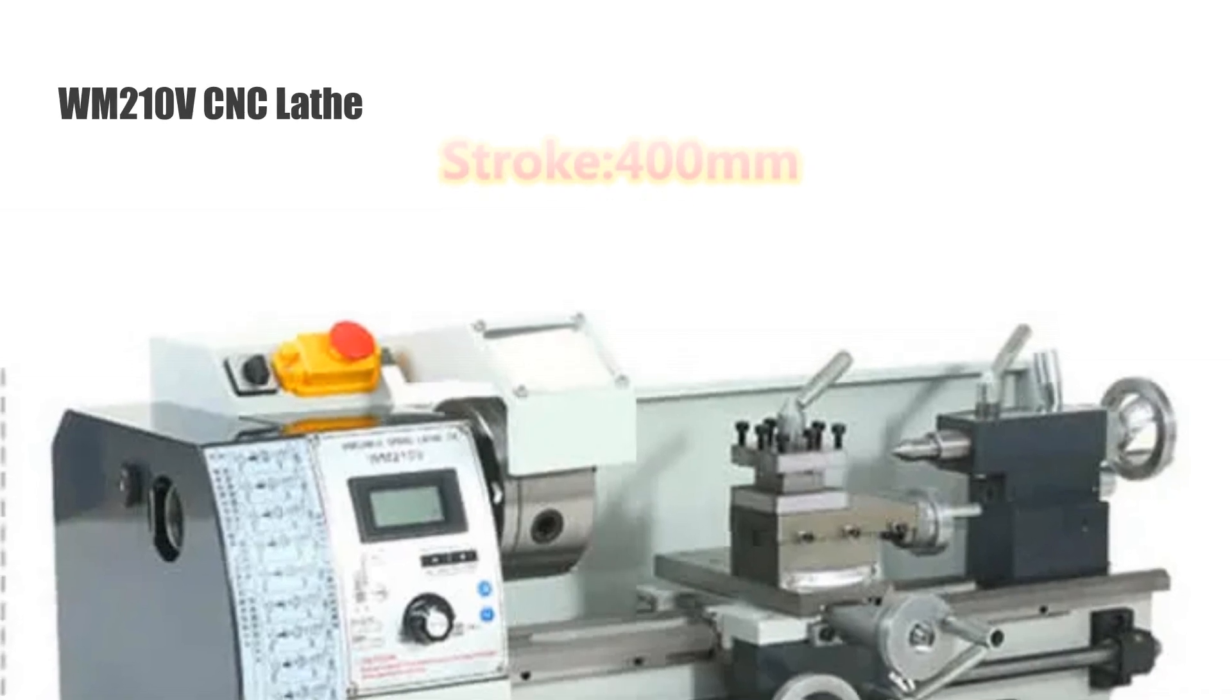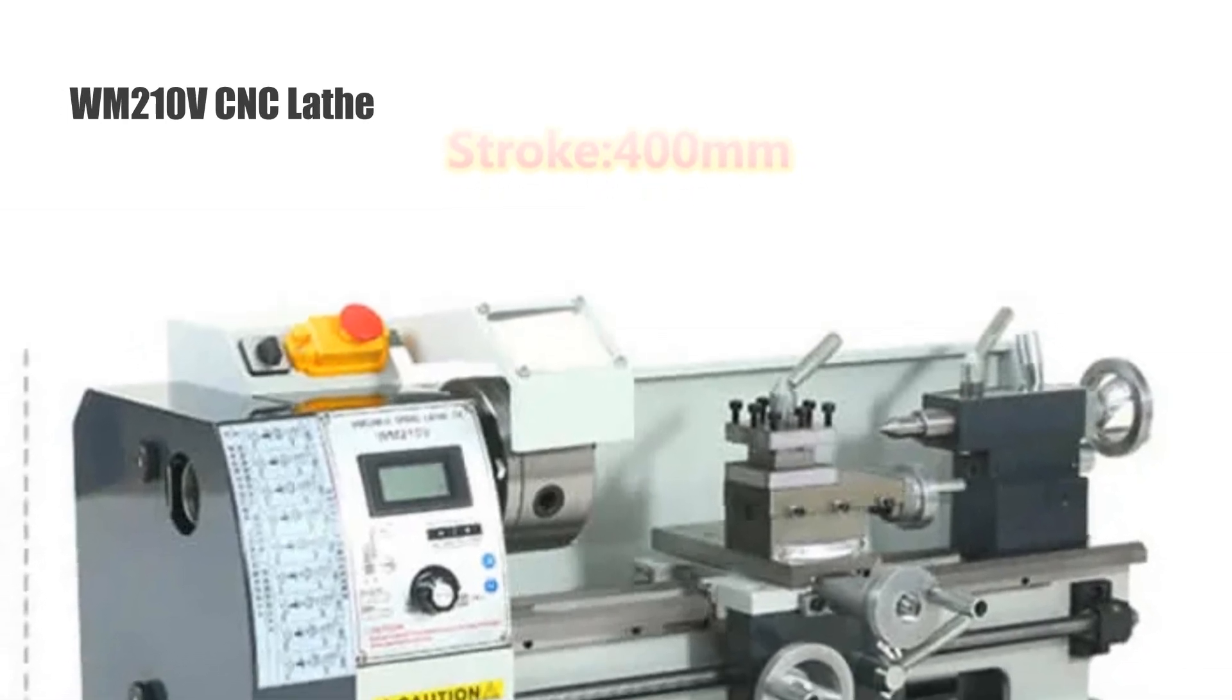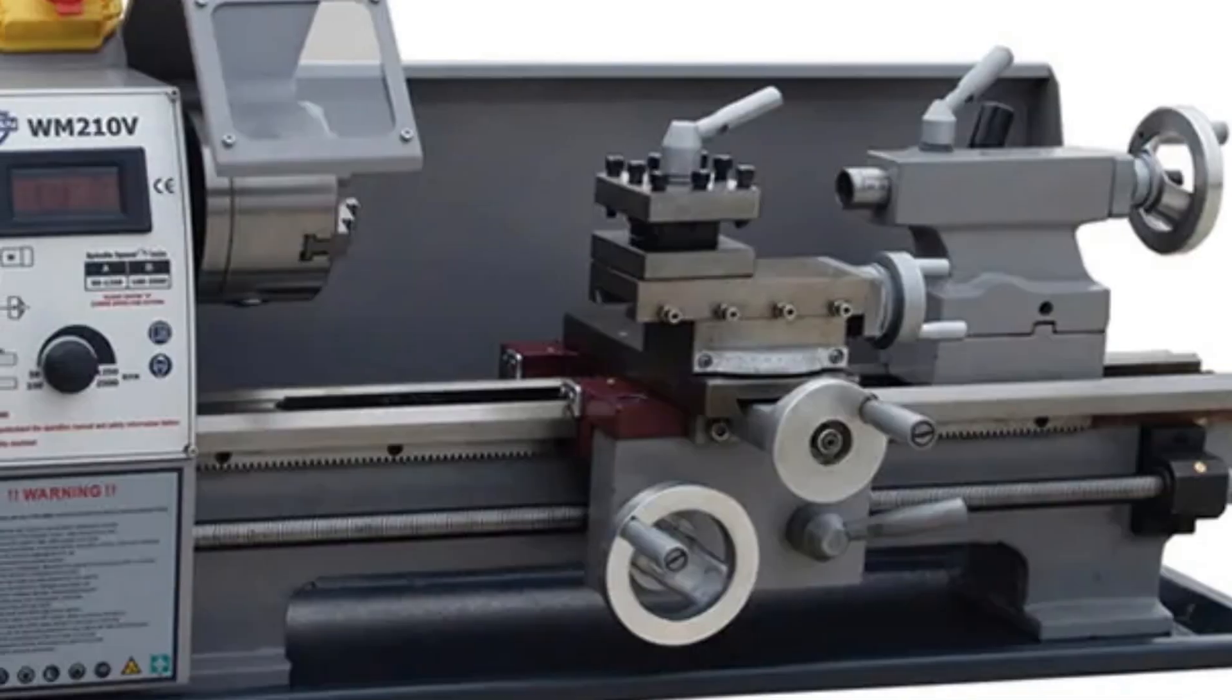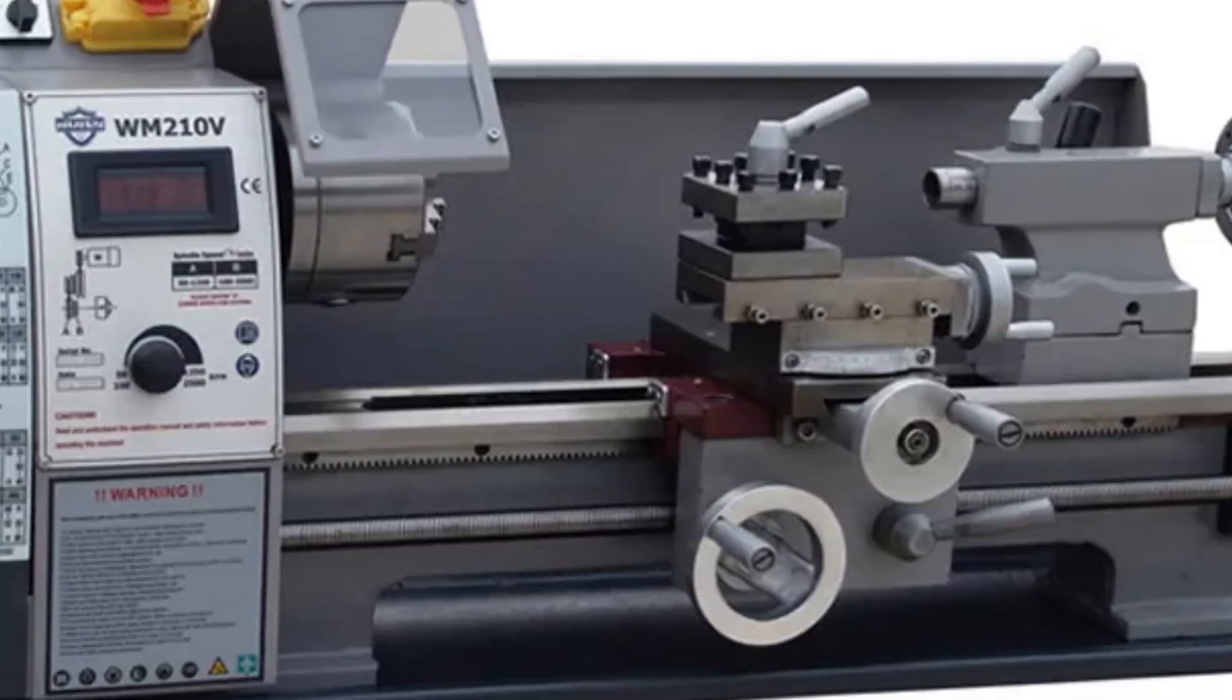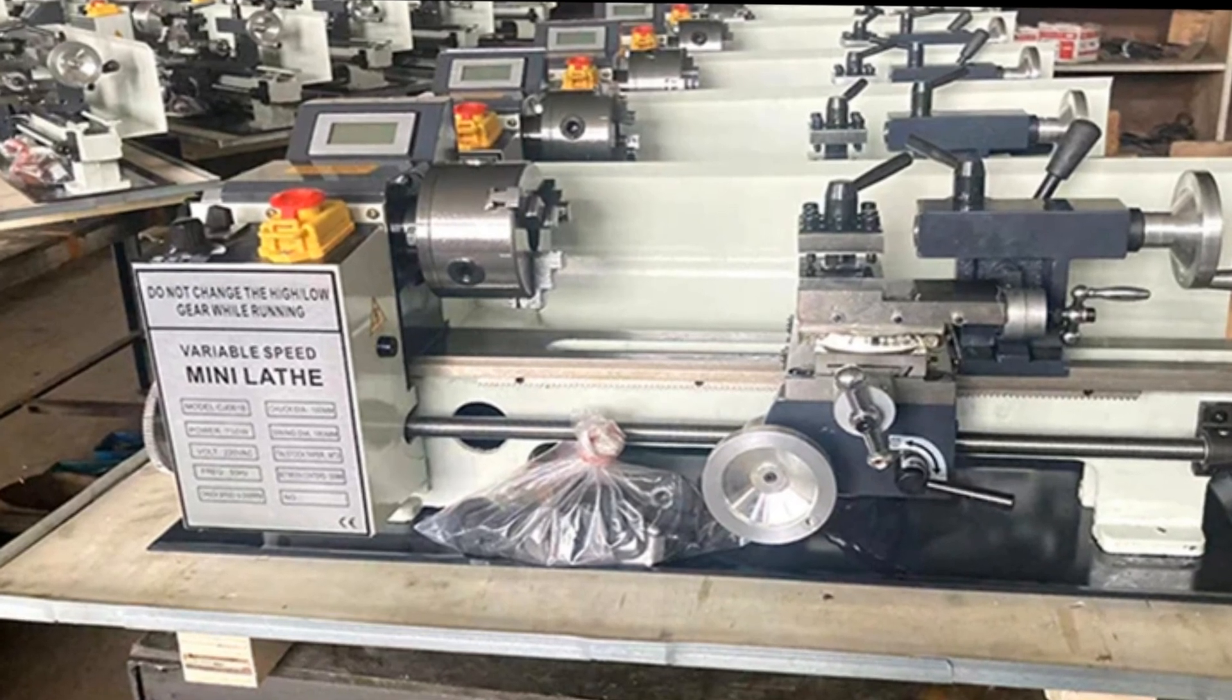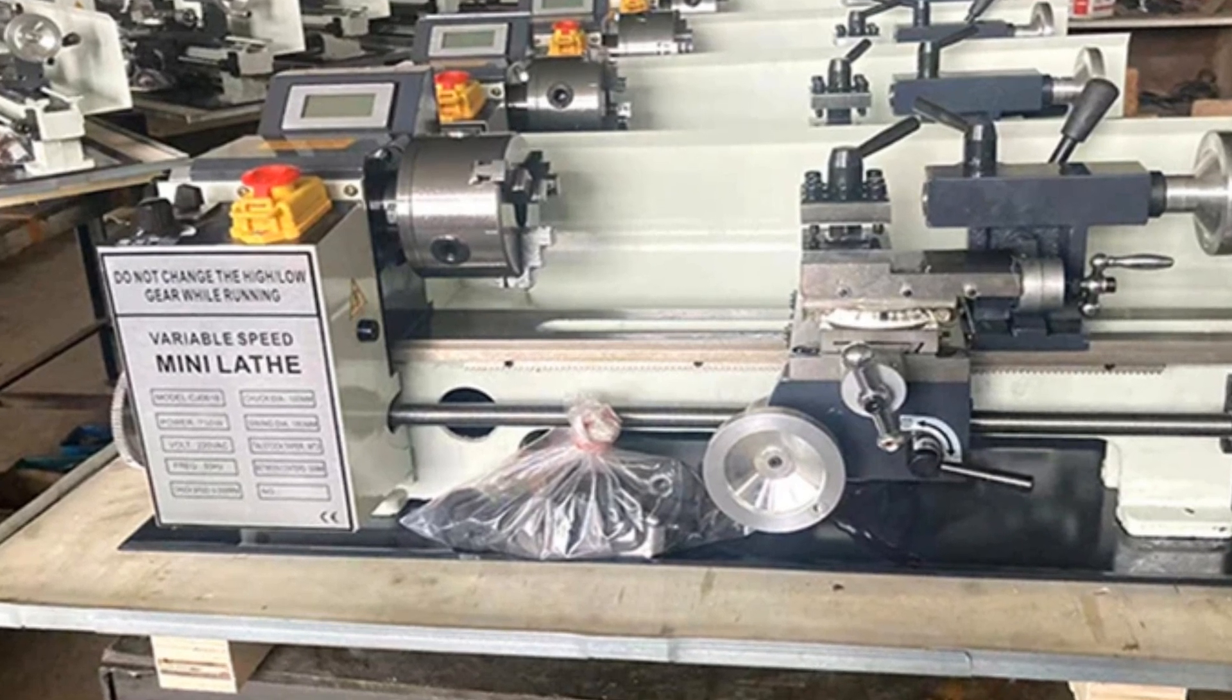Number 3, WM210V CNC Lathe. The WM210V CNC Lathe combines power and automation for efficient metalworking tasks. Equipped with an 850W motor and a 400mm stroke, it's suitable for semi-automatic operations.